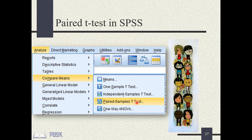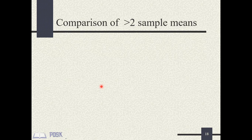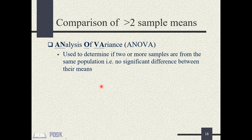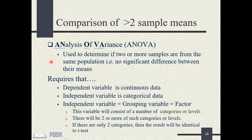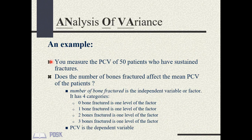T-tests are limited to instances when the independent variable has only two categories. But when the independent variable has more than two categories, you should use ANOVA — Analysis of Variance. Like the T-test, ANOVA demands a dependent variable that is continuous and normally distributed. However, unlike the T-test, the independent variable in ANOVA can have more than two categories.